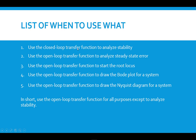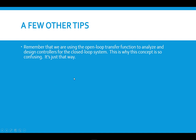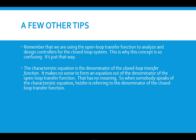Remember that we use the open loop transfer function to analyze and design controllers for the closed loop system — and that's why this concept is so confusing, but that's just the way it is. The characteristic equation is the denominator of the closed loop transfer function. It does not make any sense to make an equation out of the denominator of the open loop transfer function — that has no meaning. So if someone refers to the characteristic equation of a system, he or she is simply referring to the denominator of the closed loop transfer function, not of the open loop transfer function.